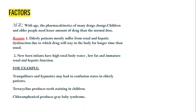Number one is age. With age, the pharmacokinetics of many drugs change. Pharmacokinetics is the rate at which a drug performs or shows its action. Children and older people need a lesser amount of drug than the normal dose.